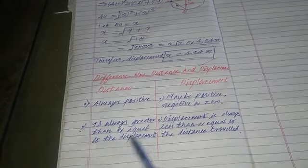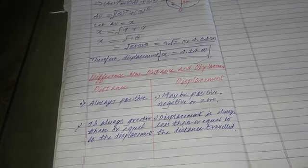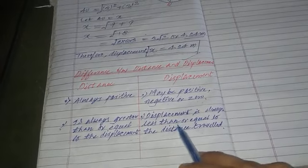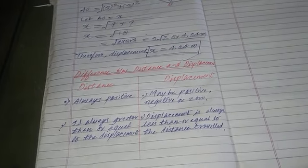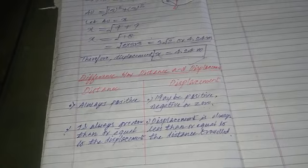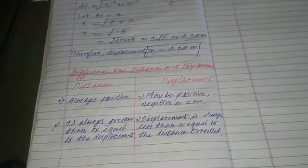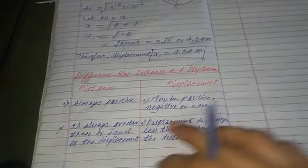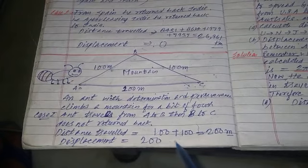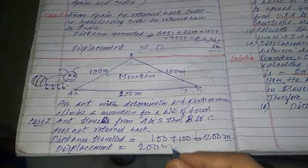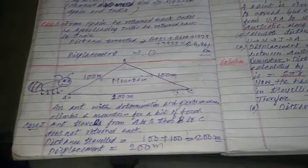Distance is always greater than or equal to displacement. I have given you many examples — you can see. Displacement is always less than or equal to the distance travelled. In most examples, displacement was smaller than distance. But when we considered the example of the ant, both values — distance travelled was 200 meters and displacement was also 200 meters — they were equal. So displacement can be smaller than or equal to distance.